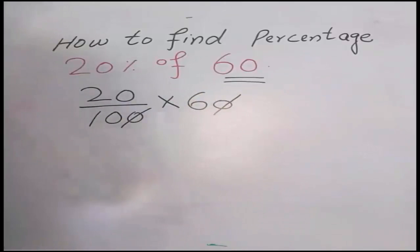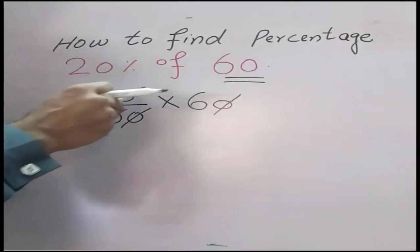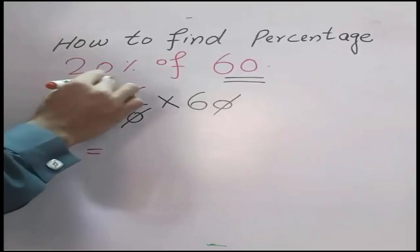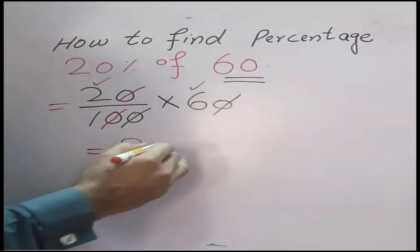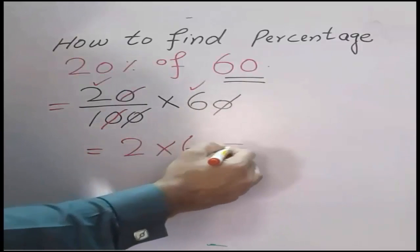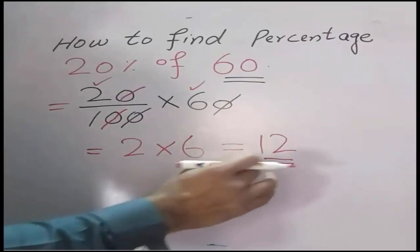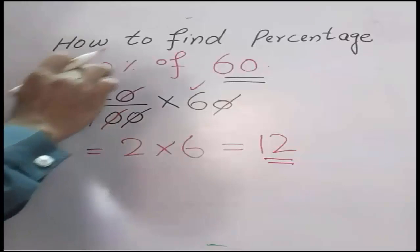After cutting this value, we will have to multiply 2 times 6, which is equal to 12. 12 is the percentage of 20 with 60.